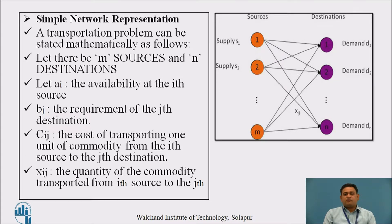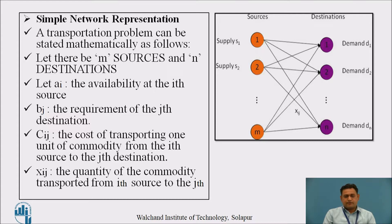This is the simple network diagram of the transportation problem. The circle nodes in orange represent the sources and the circle nodes in purple represent the destinations. There are m number of sources and n number of destinations. The commodity can be supplied from source 1 to destination 1, 2, up to n, and similarly for all m sources. The main intention is to have a proper schedule of transportation with minimum cost.